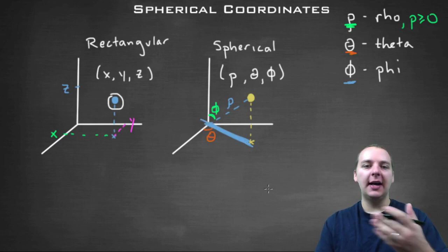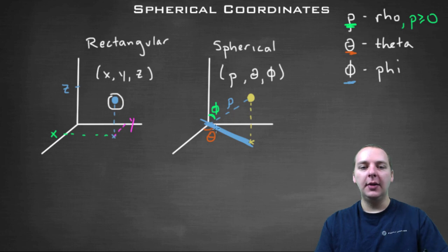So it doesn't give a good consistent measuring point of measure. But on the other hand, if you're measuring it from the z axis down to the line segment from the origin to the point, that never changes.